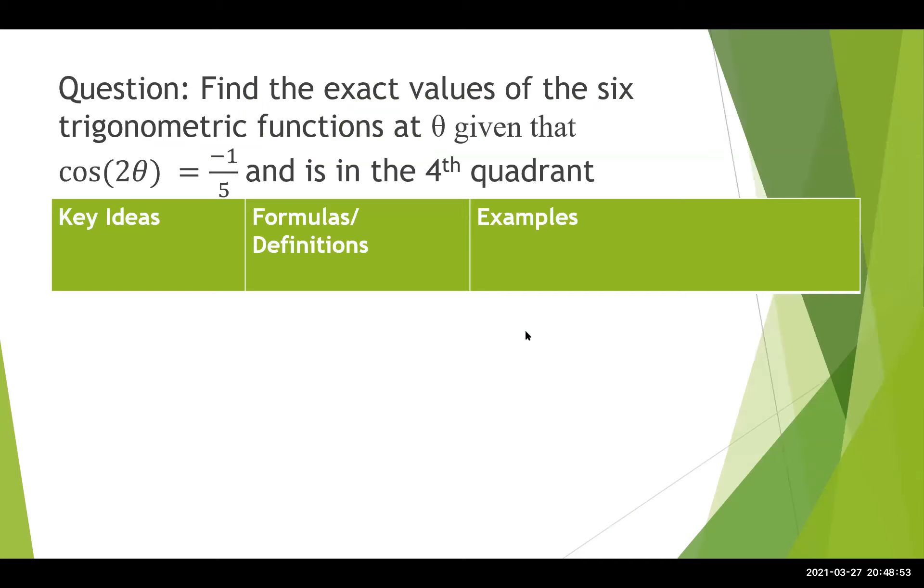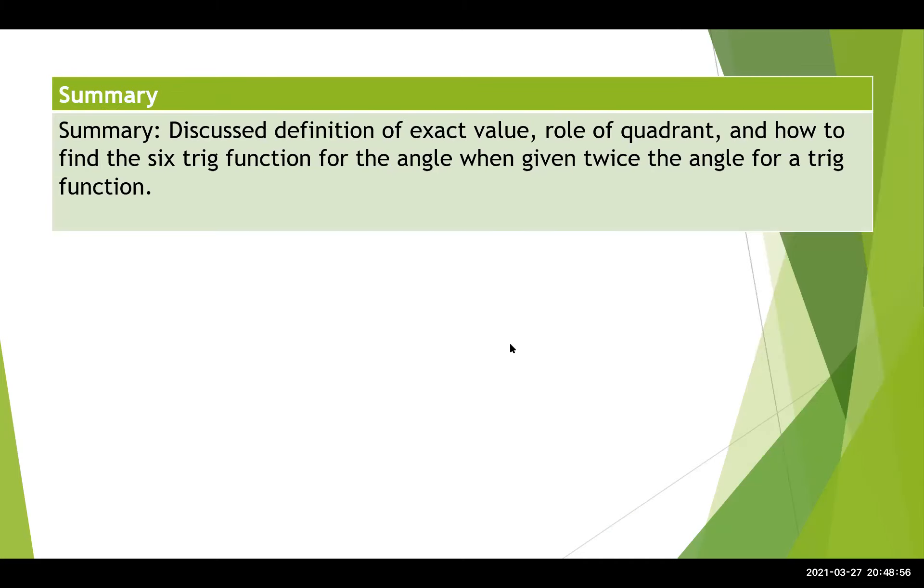So in summary, this video will help you understand what exact value means, the role of the quadrant, and how to find the six functions for the angle when you are given twice the angle for a trig function. Also note that most of the same process can be used if you're given the angle. You just get to the end with the right triangles. Let me know if you have any questions and thanks for watching.